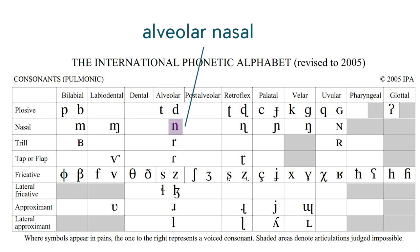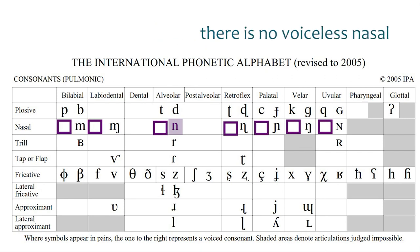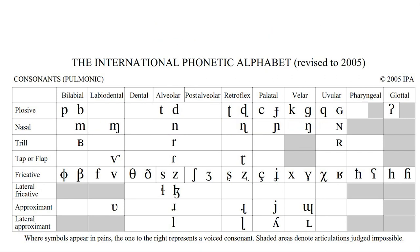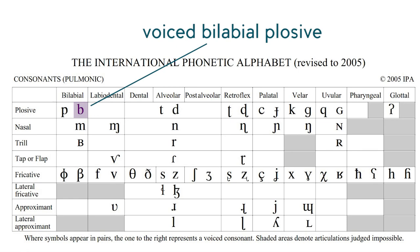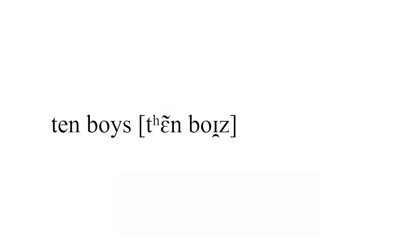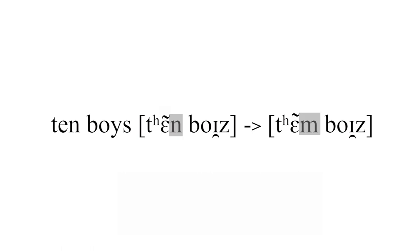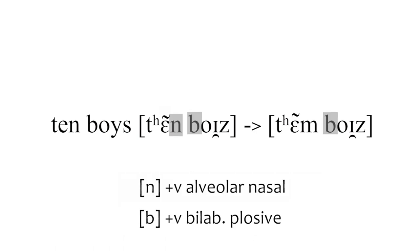Even without specifying voicing, it's still 'n' because there is no voiceless alveolar nasal. Then you have 'b', which is bilabial. So in 'ten boys', in rapid speech, people tend to say 'tem boys'. In anticipation of the bilabial 'b', the 'n' shifts — the place of articulation shifts — and it becomes 'tem boys'.